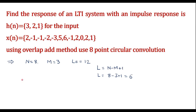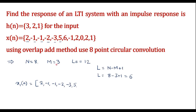Now I will divide x(n) into different blocks. The first block x1(n) should consist of L = 6 samples of x(n): 2, −1, −1, −2, −3, 5, followed by M − 1 = 2 zeros. So now we can see that the size of x1(n) is 8, as required.